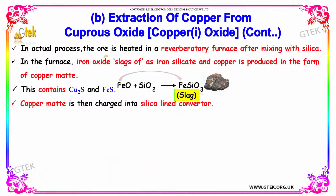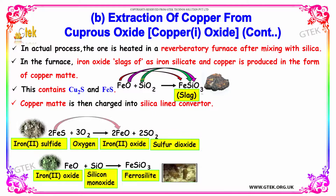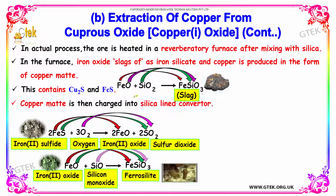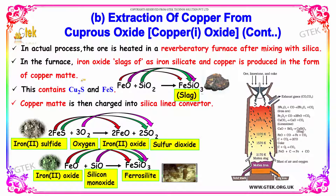In the actual process, the ore is heated in a reverberatory furnace after mixing with silica. In the furnace, iron oxide slags off as iron silicate and copper is produced in the form of copper matte, which contains cuprous sulphide and iron sulphide. The copper matte is then charged into silica-lined converters. Iron sulphide reacts with oxygen to give iron oxide and sulphur dioxide, and iron oxide with silica gives iron silicate slag.